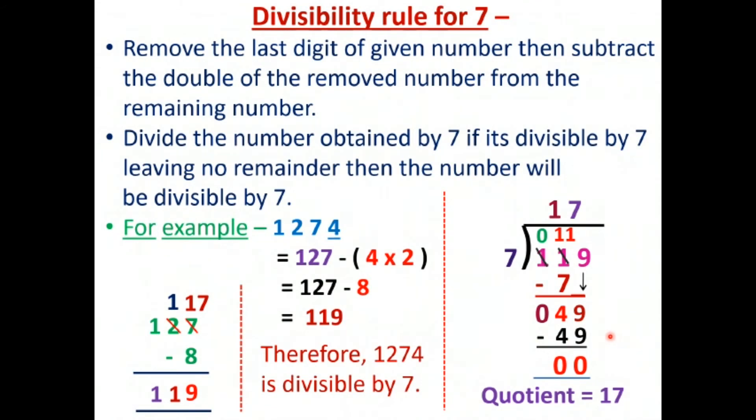If we are not getting 0 as the remainder, then the number will not be divisible by 7.